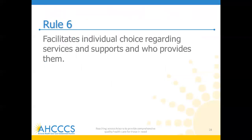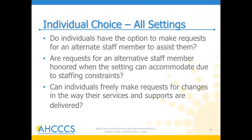Rule 6 is to facilitate individual choice regarding services and supports and who provides them. For all settings, some of the questions you might see on the provider self-assessment will be: do individuals have the option to make requests for an alternate staff member to assist them? If a member has a particular staff member they enjoy working with, could you work with them to make sure they work more closely together or have more time together — whatever you're able to accommodate with your staffing constraints? Can individuals freely make requests for changes in the way their services and supports are delivered?